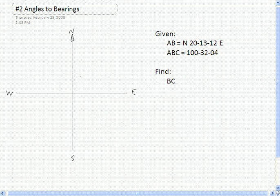This is a common situation where you're given a bearing and then you're given an angle between that bearing and another line, and you want to find the bearing of the second line.